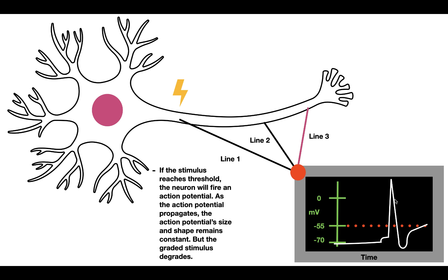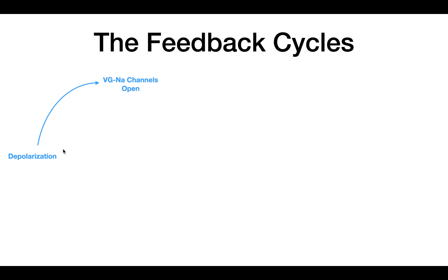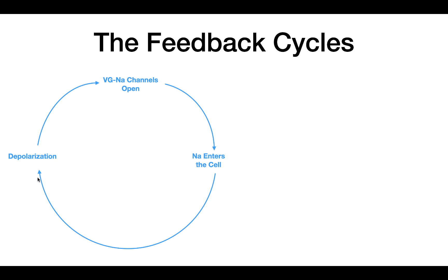This will help us understand the all-or-none principle. To understand it, we need to understand feedback cycles. In the action potential there are two. The first is the voltage-gated sodium channel cycle: depolarization opens voltage-gated sodium channels, sodium flows into the cell, which further depolarizes the cell, opening more sodium channels. This positive feedback cycle keeps feeding forward, producing the upstroke we see in the action potential — responsible for the depolarization phase.